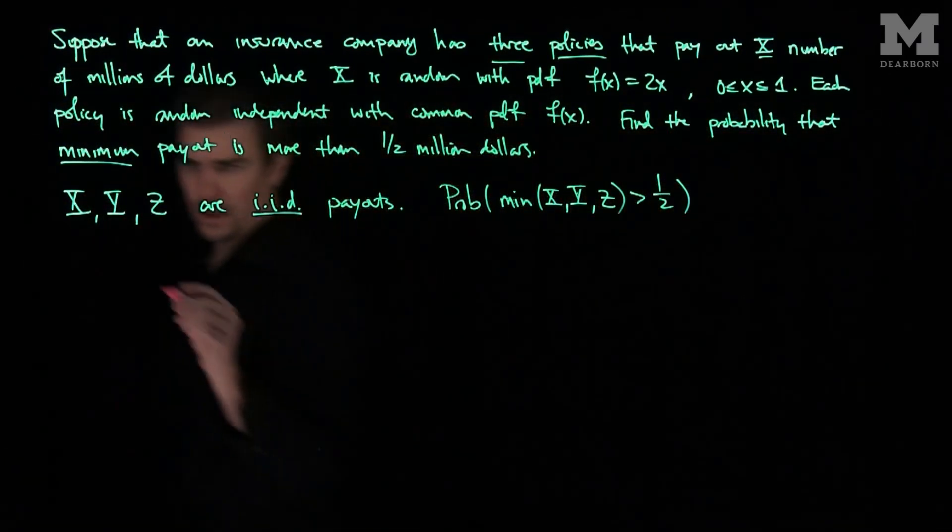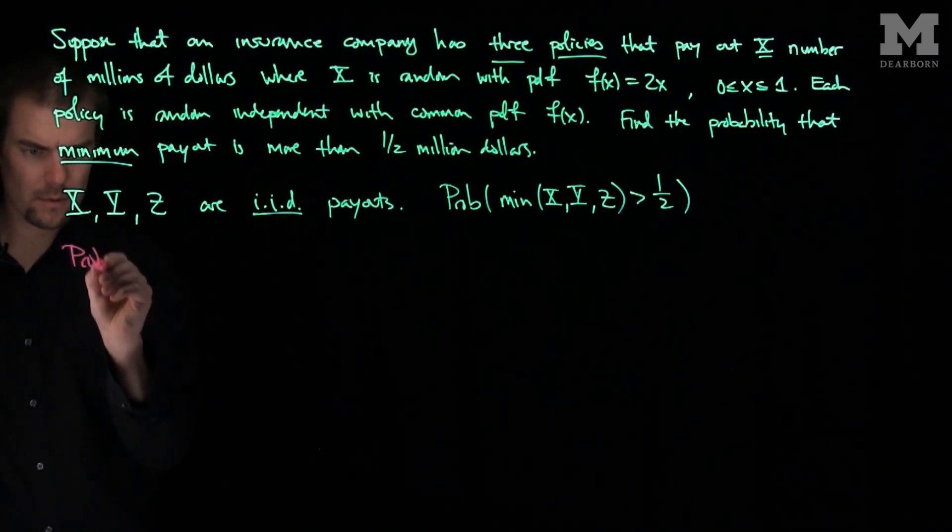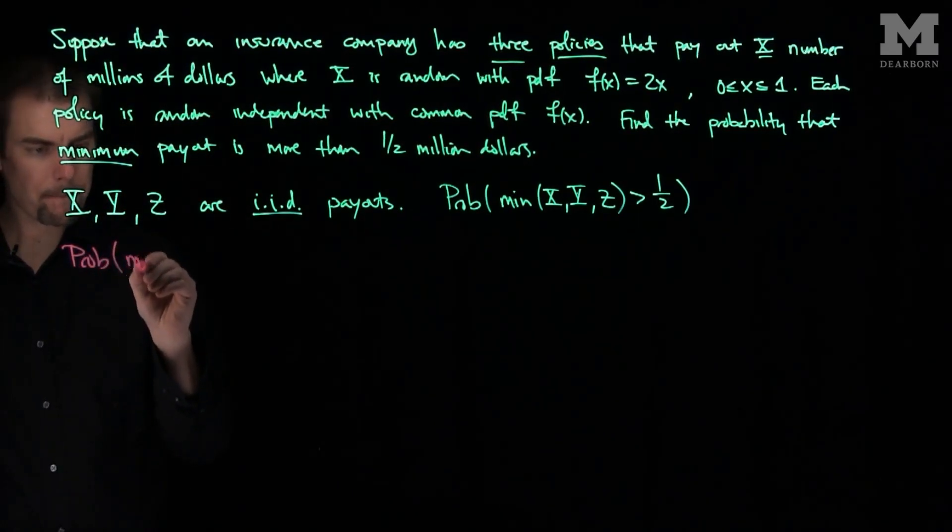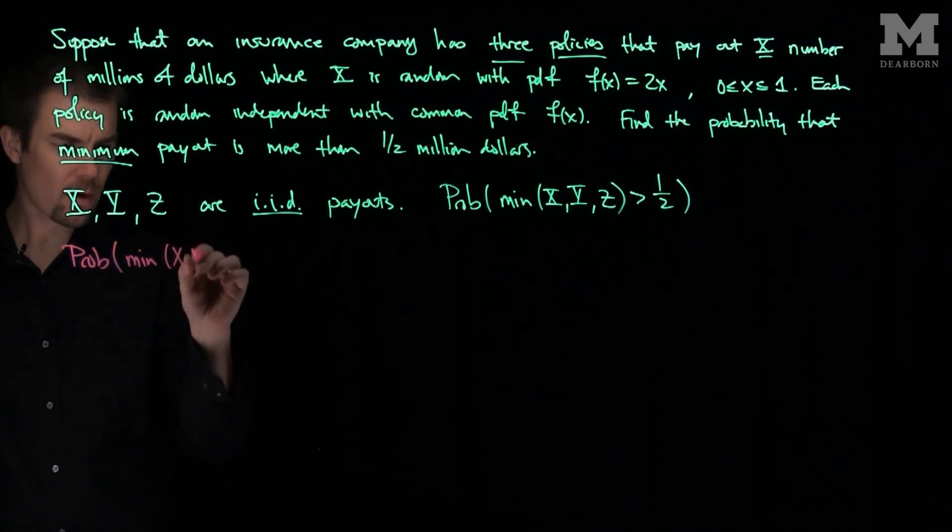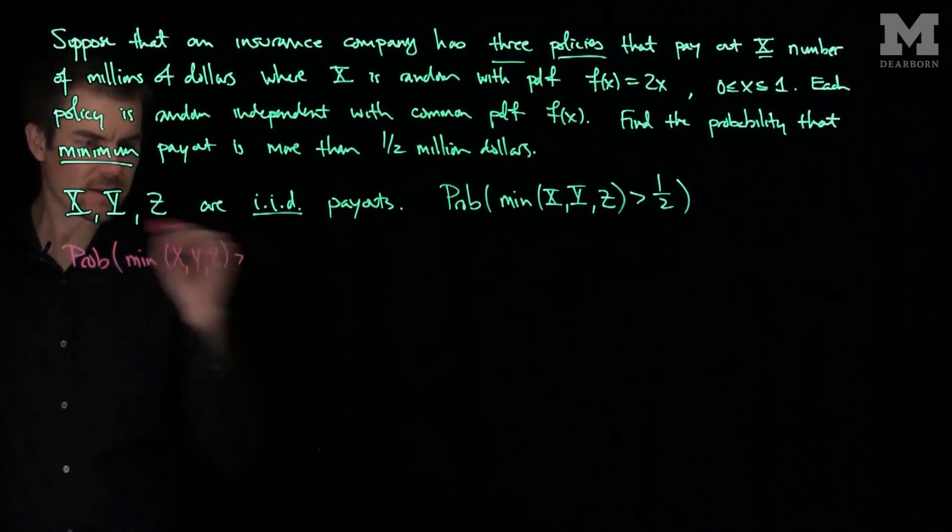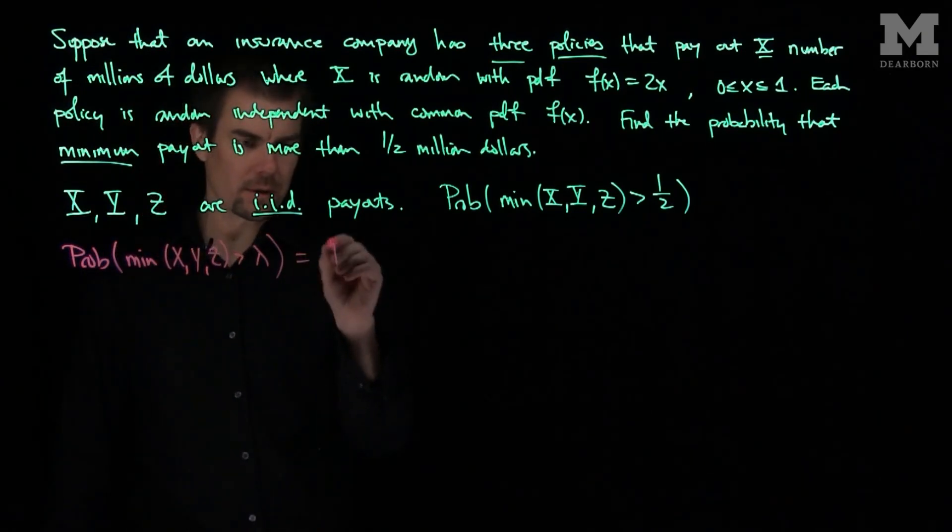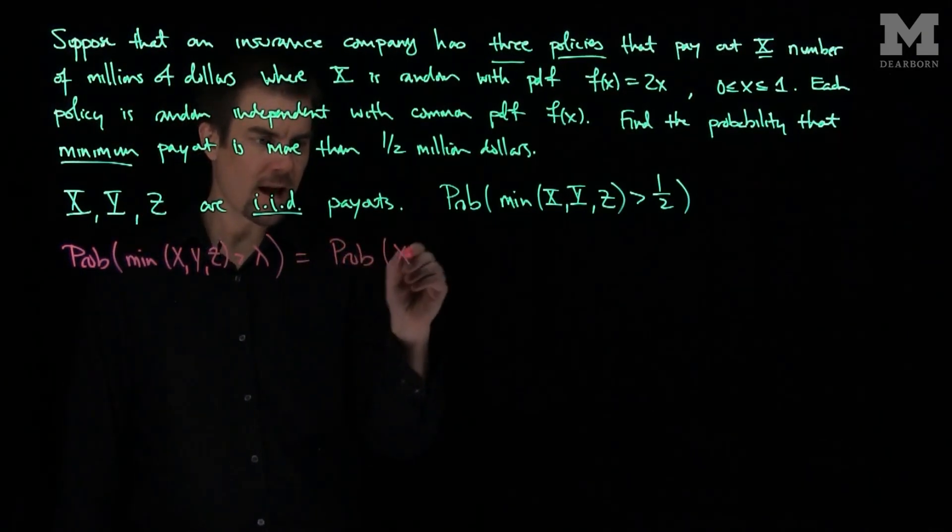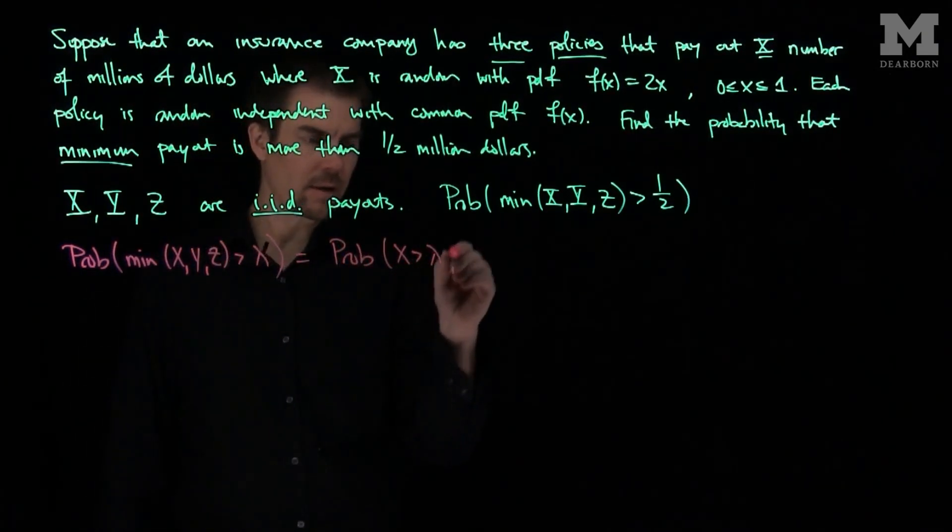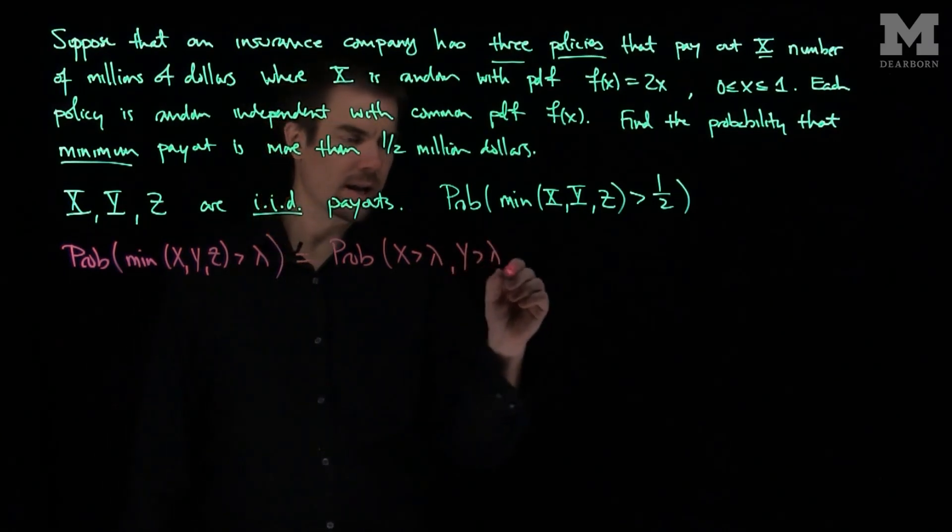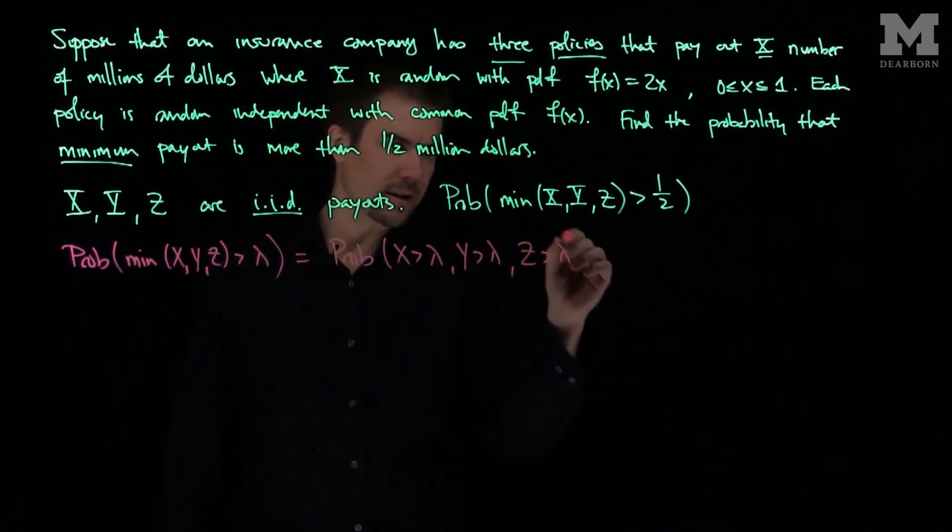If we generalize this and ask the question, what is the probability that the minimum of X, Y, and Z is bigger than lambda? Well, that's the probability that X is bigger than lambda, Y is bigger than lambda, and Z is bigger than lambda.